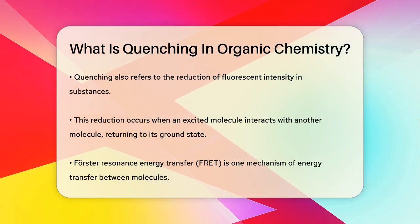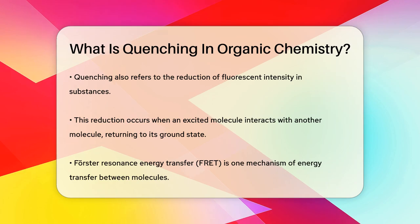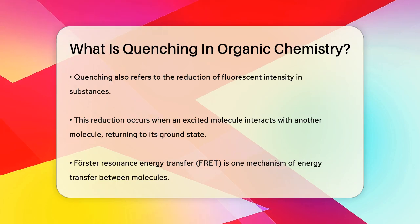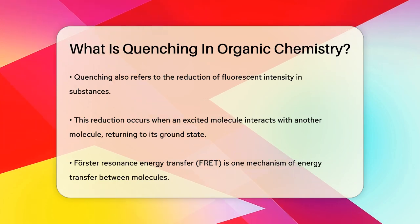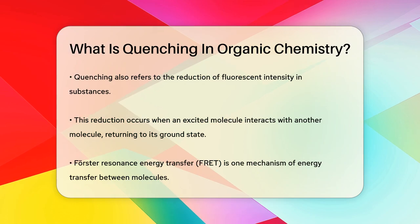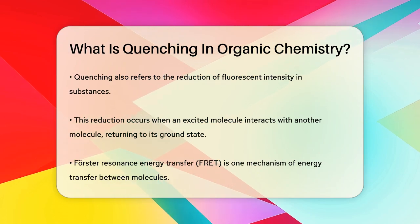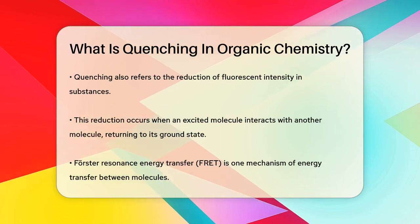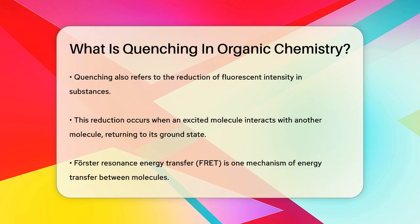Quenching can also refer to the reduction of fluorescent intensity in a substance. This happens when a molecule in an excited state interacts with another molecule or atom, causing it to return to its ground state without emitting light.